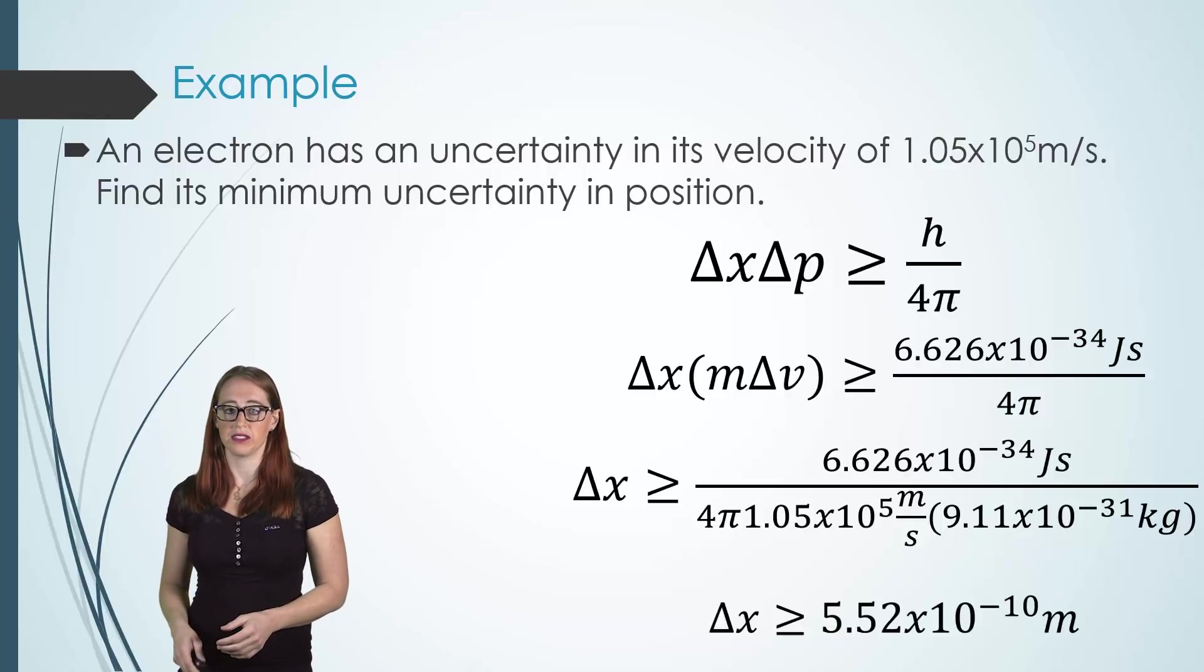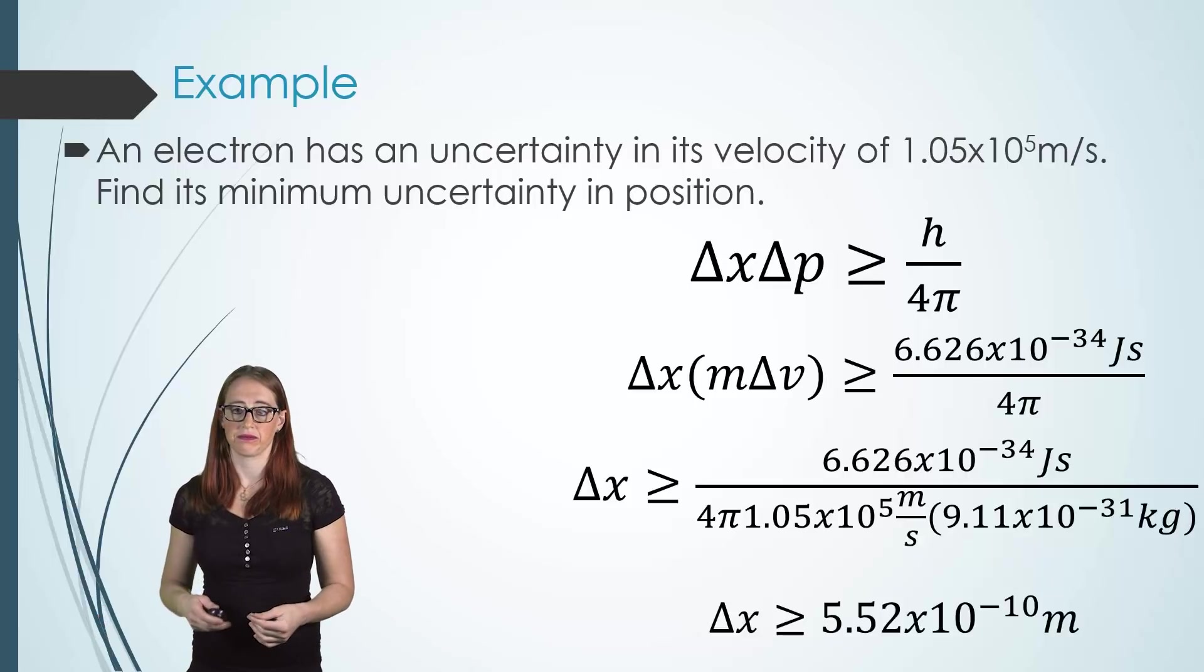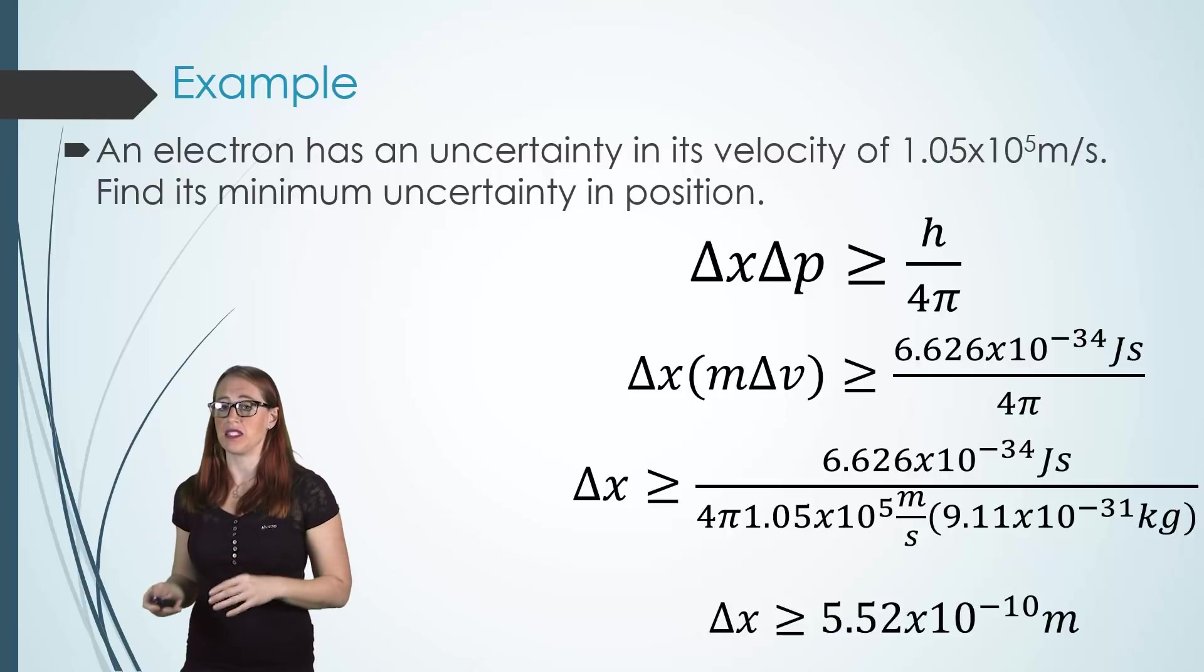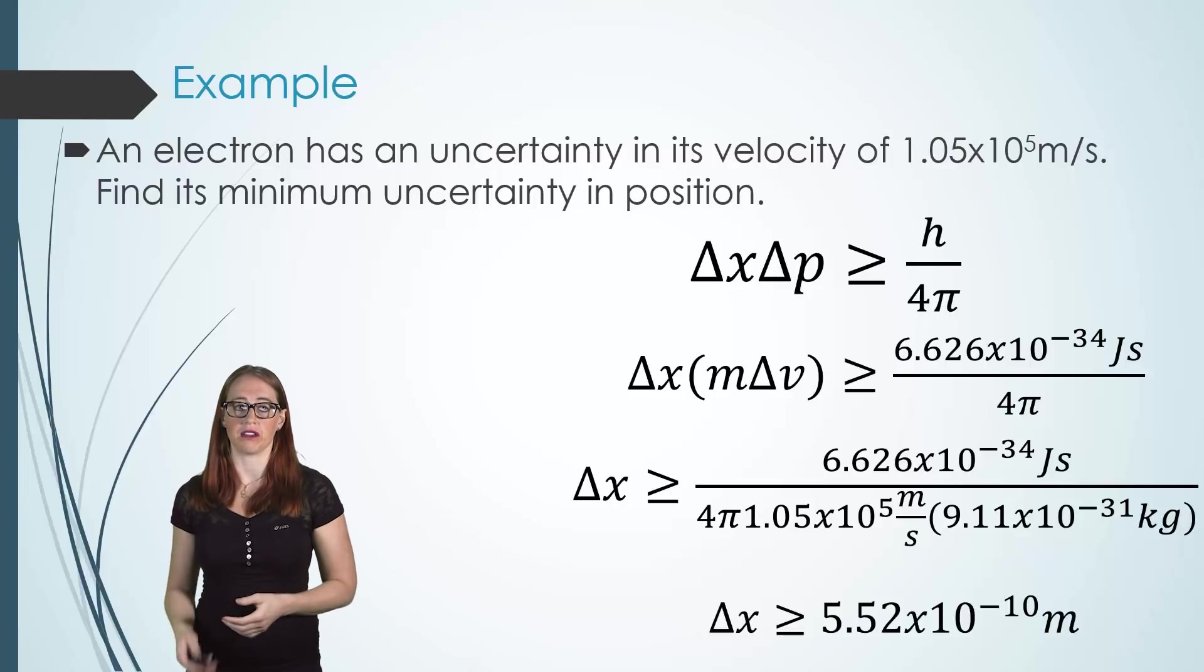From here, we solve for our answer. We get 5.52 times 10 to the negative tenth. Now, you might say that this is very small as well, but it isn't actually that small when you consider how tiny an electron is. And so, the Heisenberg uncertainty principle is an issue that comes up and that we have to deal with when talking about electrons. And we'll dive into this concept of when these quantum principles make a difference for matter in the de Broglie wavelength equation video that we'll cover later on.